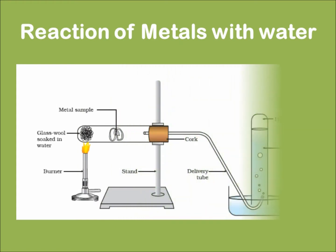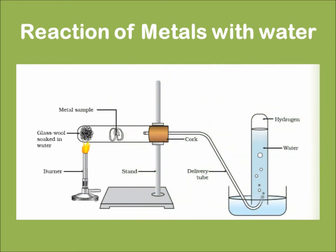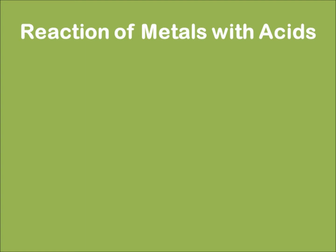Given below is the setup to make a metal react with steam. Now let us learn about the reaction of a metal with an acid. A metal when reacted with a dilute acid will give salt and hydrogen.